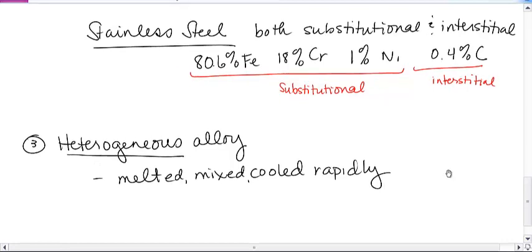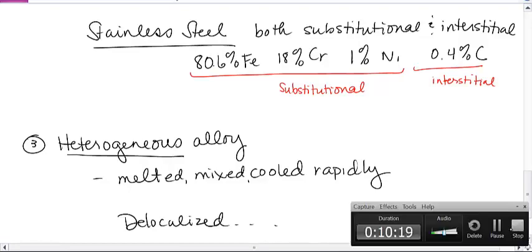But the important thing to understand with all of these alloys is it's no different than the electron sea model that we saw. All of them have delocalized electrons, which is why alloys are able to have the properties of a metal. Alright, we'll see you guys in class next time.